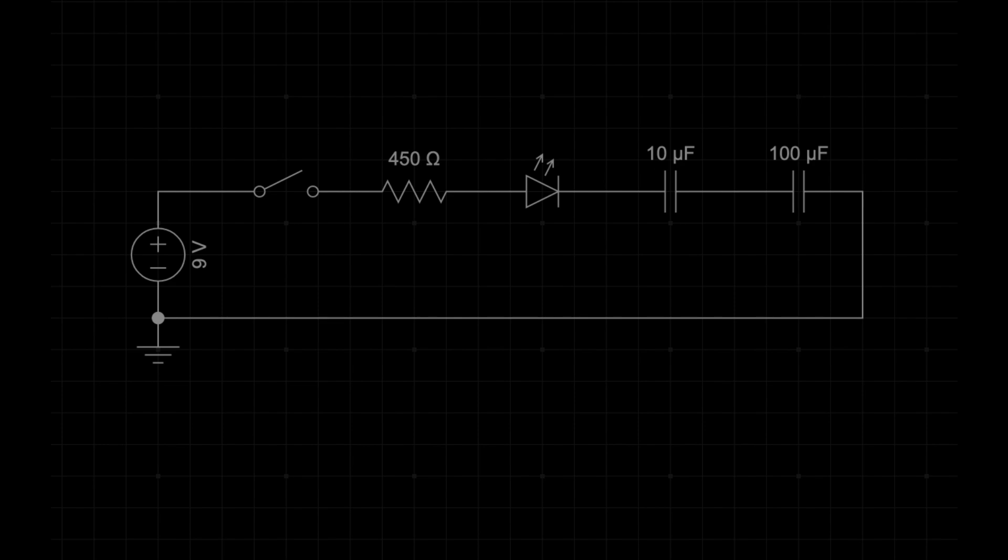For a demonstration of capacitors in series, I will attach a resistor and an LED in series. When the circuit is closed, the LED doesn't light up. Why?